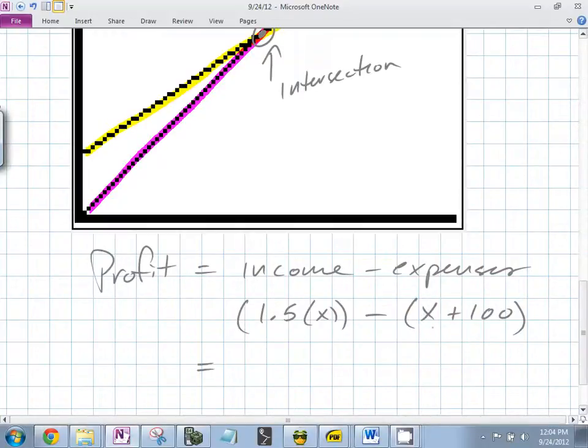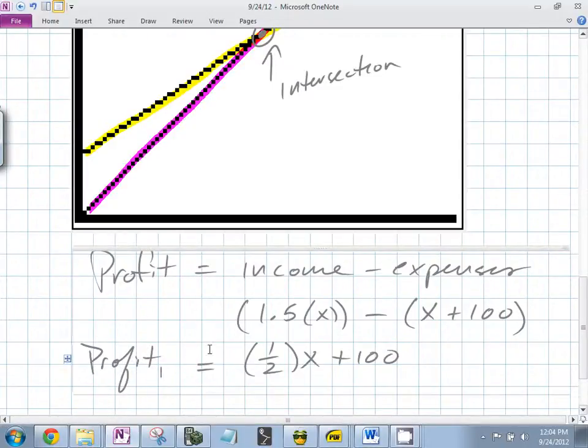So what's 1.5X minus X? What is 1.5X minus X? 1.5X plus 100. So our profit is equal to what? 100. 1.5X plus 100. And we were interested. Where does that break even? Oh, it's minus 100. And that was when it's equal to? When X is equal to 200.